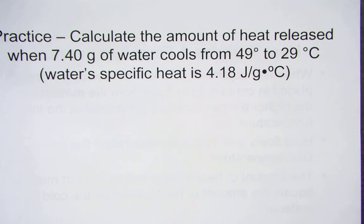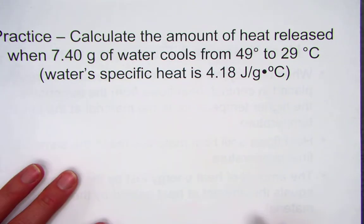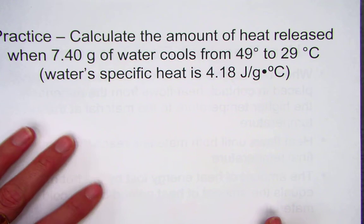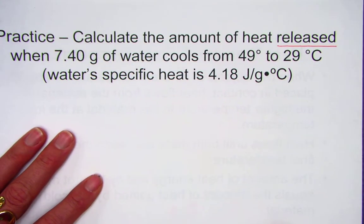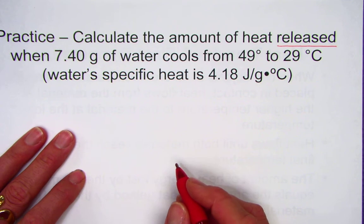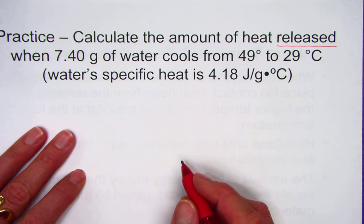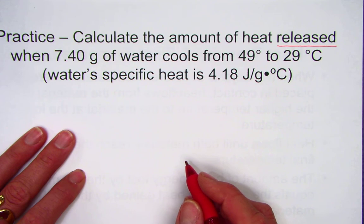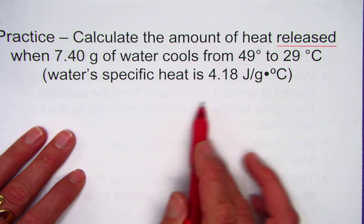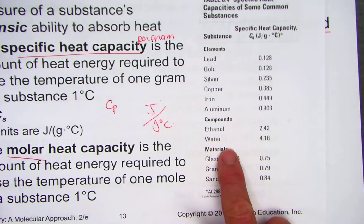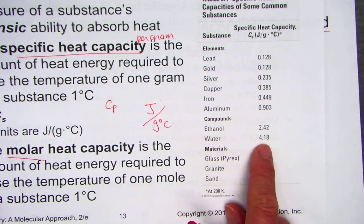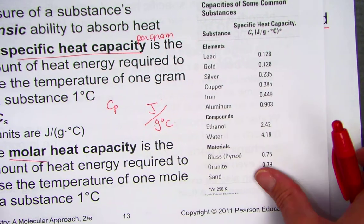Our next problem employs the same practice. We're going to calculate the amount of heat released — an exothermic process, releasing heat — when 7.4 grams of water cools from 49 to 29 degrees Celsius. They gave us the specific heat for water, but we could also find that in our specific heat constant table: 4.18 joules per gram Celsius.